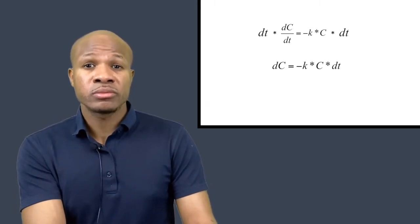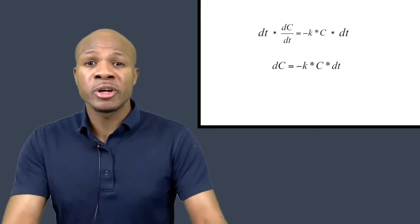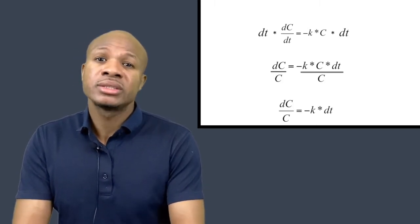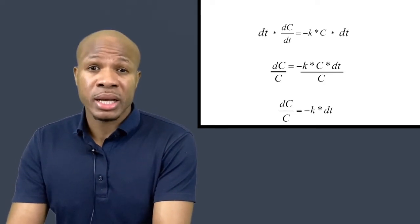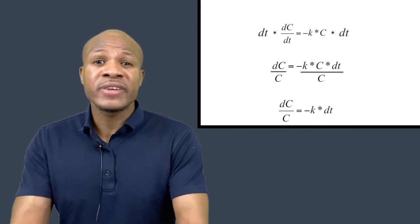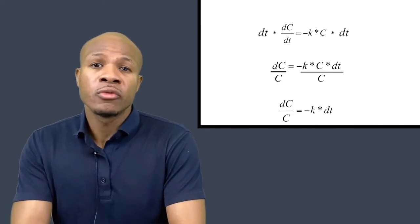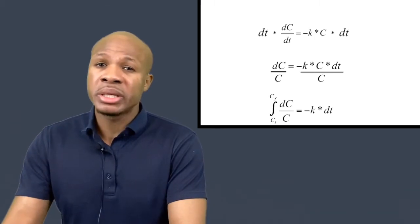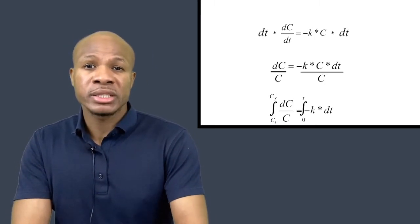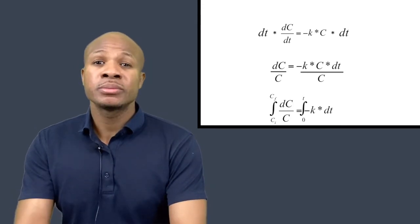We integrate both sides. On the left hand side, we integrate (1/C) dC from some initial concentration C_initial to C_final. On the right hand side, we integrate minus k dt from time zero to time t. The integral of (1/C) is natural log, so we get: ln(C_final) minus ln(C_initial), which equals ln(C_final / C_initial), and that equals negative k times t.